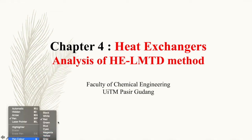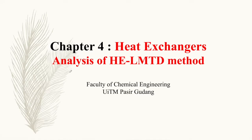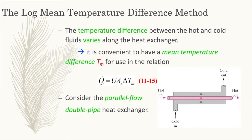In this video I will explain more on the LMTD method, because previously I've already mentioned that there will be two methods in order for you to do analysis on a heat exchanger. The first method is the LMTD method. The temperature difference between the hot and cold fluid varies along the heat exchanger, so it is convenient to have a mean temperature difference Tm for use in the relation Q-dot equals U·A·S·delta_T_min.